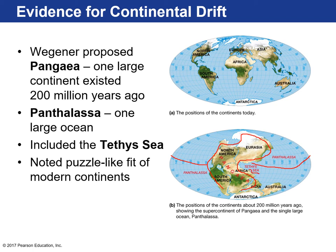One of his major lines of evidence — and I'm sure you've done this at some point, like looking at a globe — is that he noted that a lot of the modern continents look like they fit together like puzzle pieces. If you look at the eastern coast of South America and West Africa, they look like they could fit together.